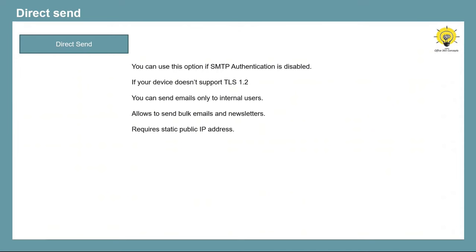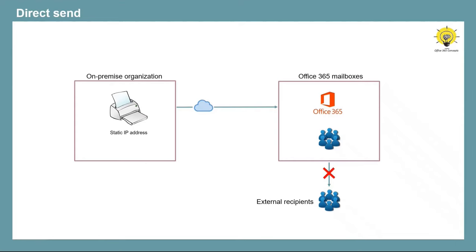If you do not configure an SPF record, the emails sent from the application will be delivered to the junk folder of users. In Direct Send, you can use any email address of your Office 365 accepted domain — this email address doesn't need to have a mailbox. You connect using the MX record of your Office 365 domain, and this communication works on port 25, so you need to make sure port 25 is open on your network. You cannot send emails to external users using Direct Send; if you try, you will receive an NDR or non-delivery report.